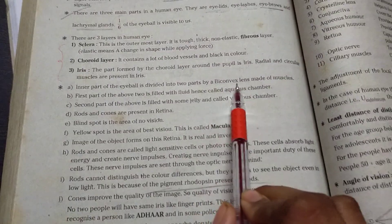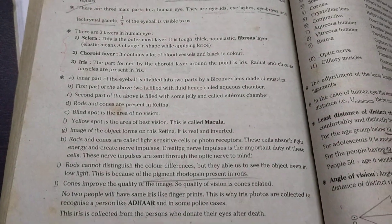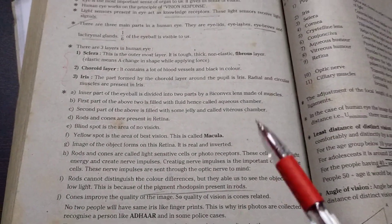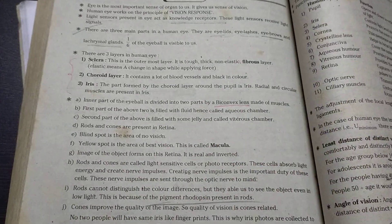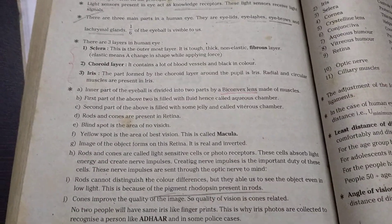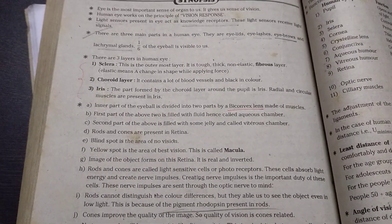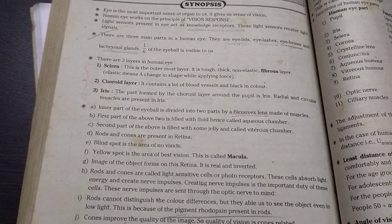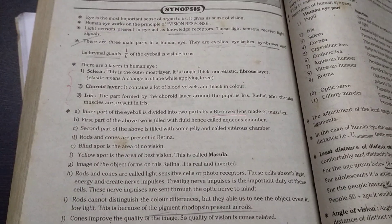An inner part of the eye is divided into two parts by bi-convex lens made of muscles. So you know that bi-convex lens which is divided into two parts in our eye. It's just made up of muscles. And in our eye there are many blood vessels also. That's why our eye is so smooth.